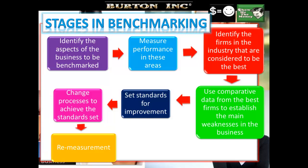There are definite stages in benchmarking. The first is to identify the aspects of the business to be benchmarked — perhaps done by interviewing customers and finding out what they consider most important. For example, research may reveal that the most important factors are reliability of the product, speed of delivery, and after-sales service, and these are the areas the firm would first benchmark. Stage two: measure the performance in these areas — for example, reliability records, delivery records, and the number of customer complaints.